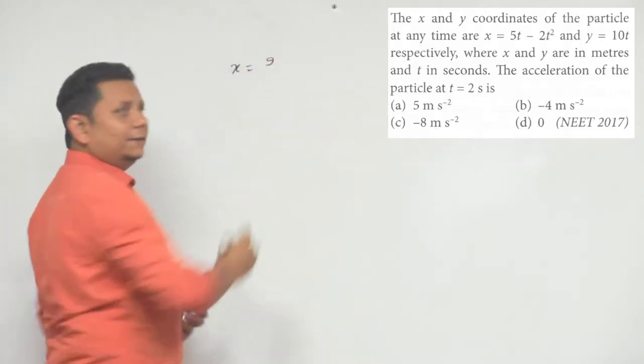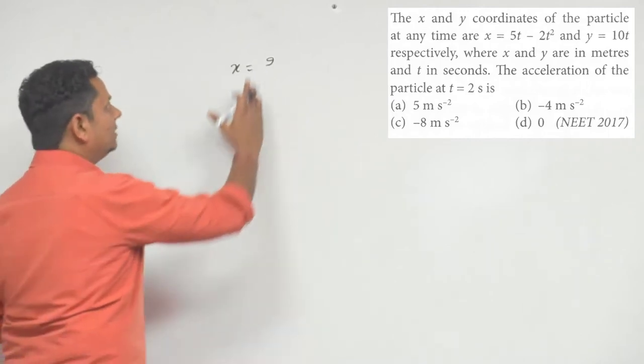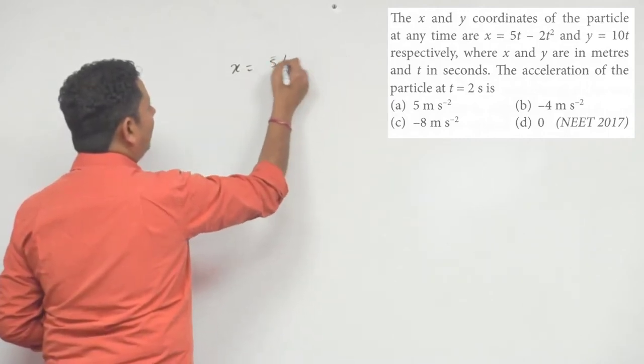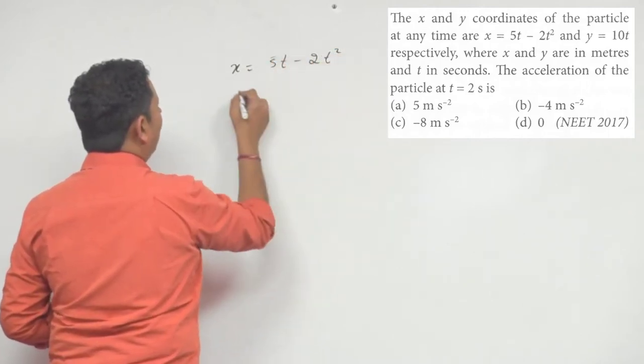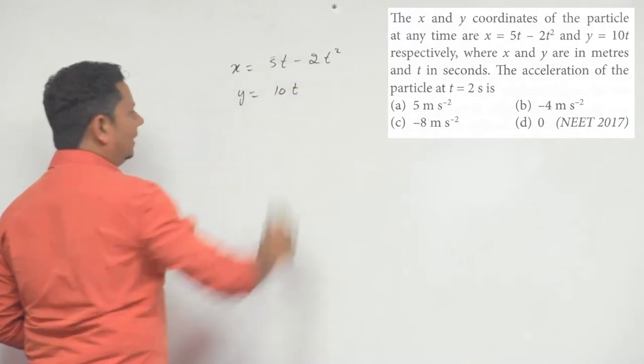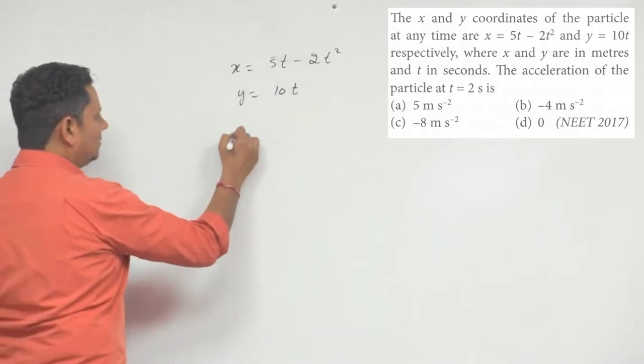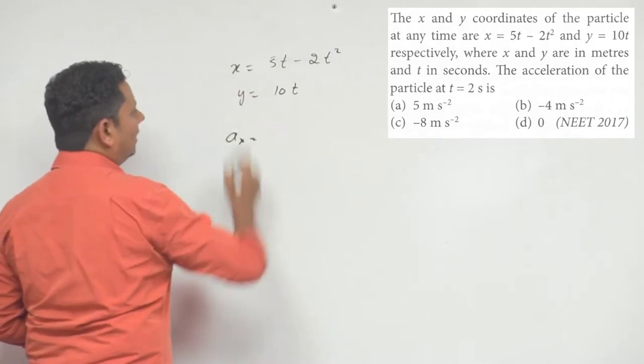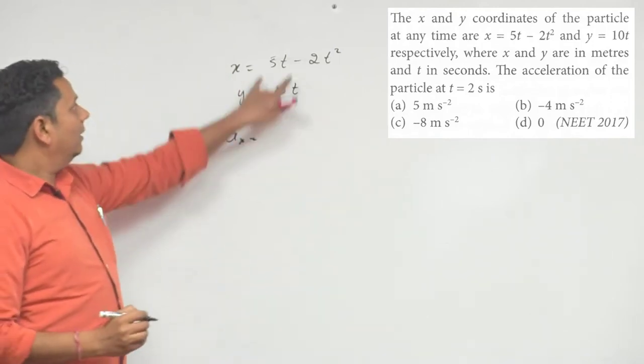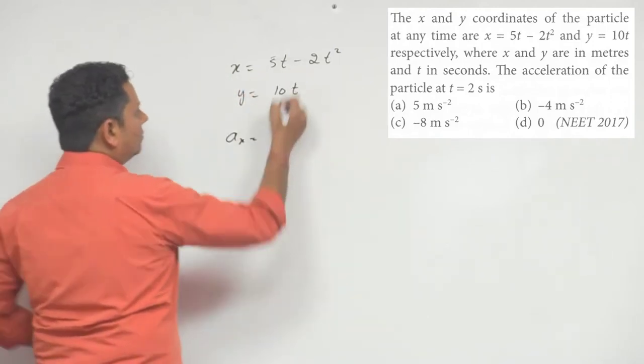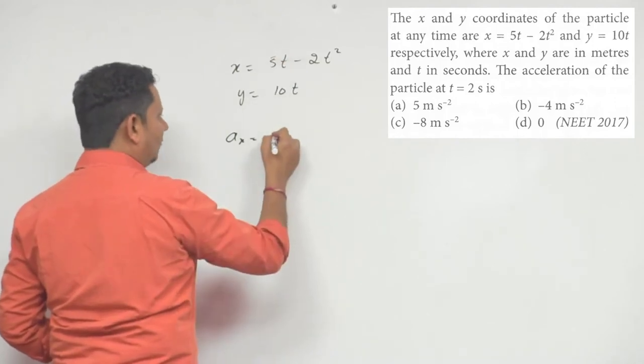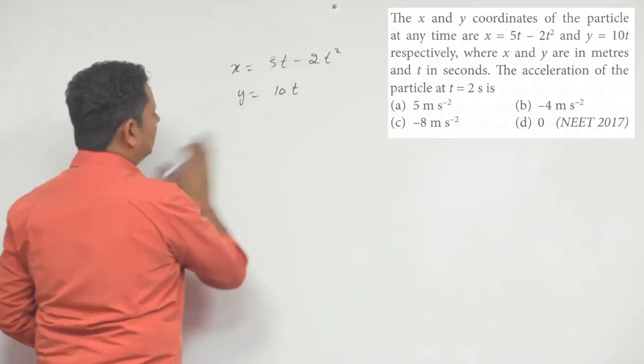So, x will be 5t minus 2t square, y equals 10t. Let's do it this way.